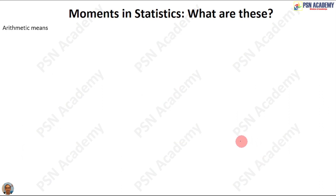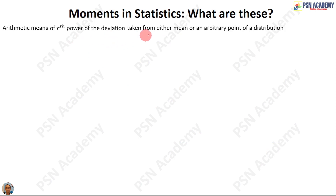The arithmetic mean of the rth power of deviations, taken from either the mean or an arbitrary point of the distribution, are known as moments. This r may be 0, 1, 2, 3, 4, and so on. The value of r will be limited up to 4 in this video.